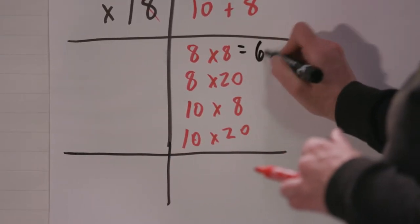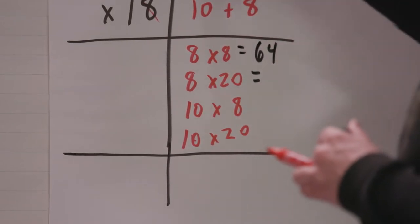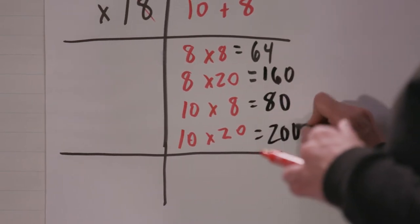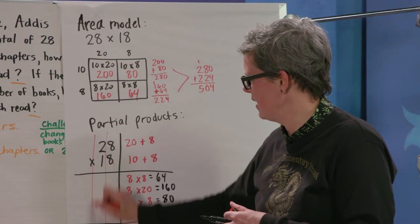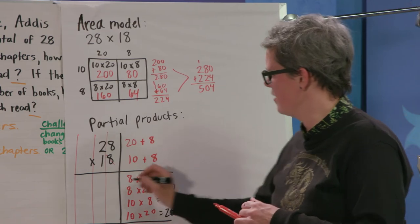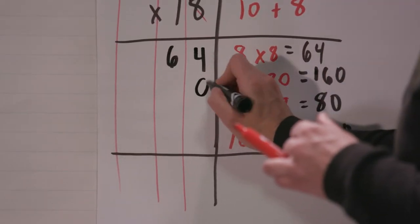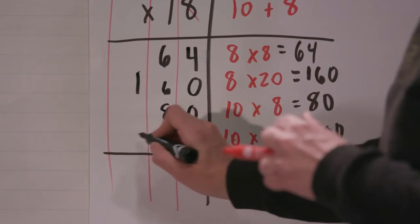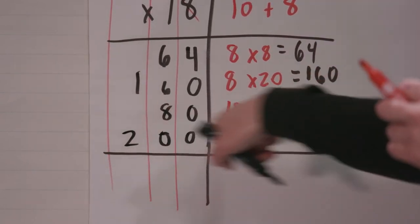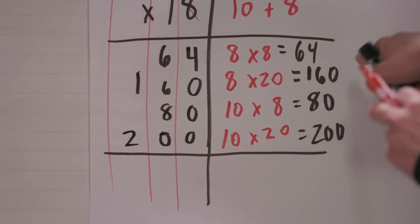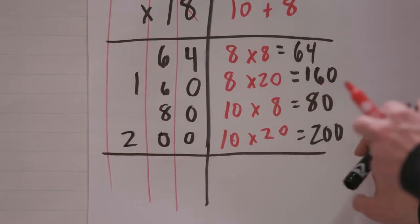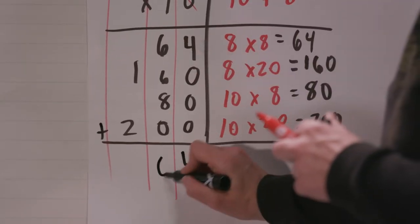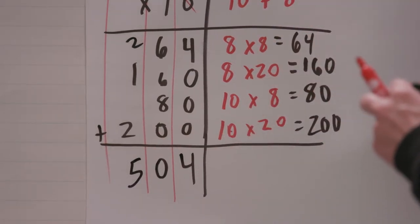So let's solve it. 8 times 8 is 64. 160, 80, 200. Remember to draw your lines, really keep these in order. 64, 4 in the 1s, 6 in the 10s. 160: 0, 6, 1. 80. 200. Another place where kids stumble when they're first learning is putting these, not lining these numbers up correctly, so take a moment, double check. Just make sure that they all are ending in the 1s place and everything is the same. Great, we can add up. 4, 6 plus 6 is 12, 12 plus 8 is 20, 2 plus 1, 3. We got the same answer, 504.